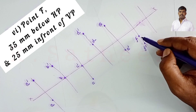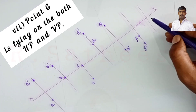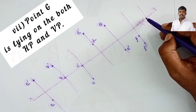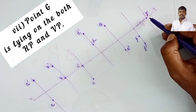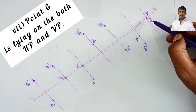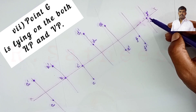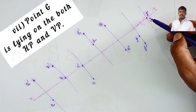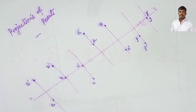Point G lies on both HP and VP. Since it is on both planes, both the front view G dash and top view small g lie on XY. So both projections coincide on the reference line XY.